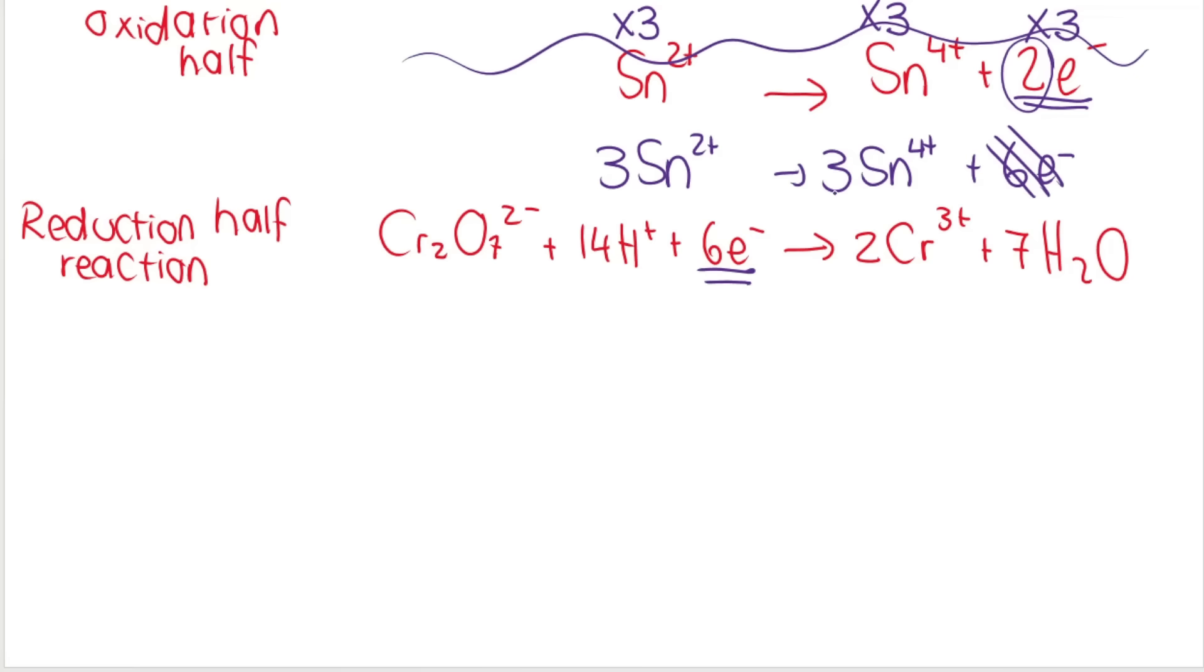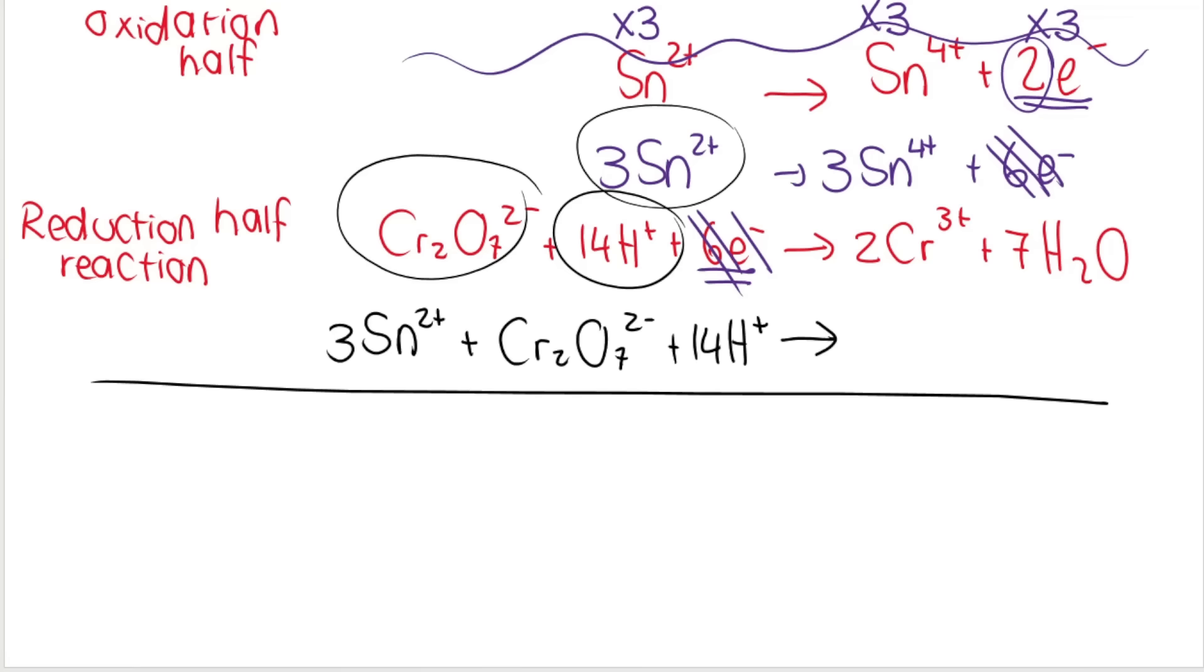Now what I do is I can cancel the electrons. You see how I keep the arrows lined up with each other. This is just helpful. So I can see what needs to be on the left hand side and what needs to be on the right hand side. So I've canceled the electrons. We've balanced it. Then everything on the left hand side, you rewrite on the left hand side. And everything on the right hand side, you rewrite on the right hand side. There we go.